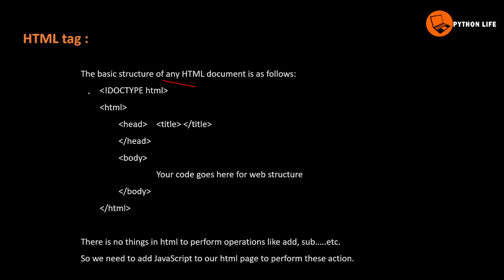An HTML document can include different elements such as text, headings, paragraphs, images, and tables. These elements are defined using different tags like heading tag, HTML tag, body tag, etc. The HTML tag can also carry a language attribute specifying the language, such as English, Hindi, Chinese, or other languages.